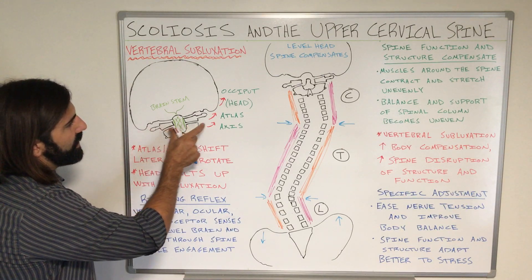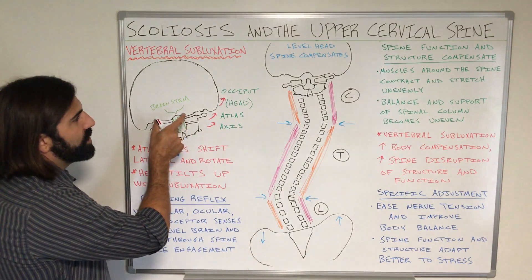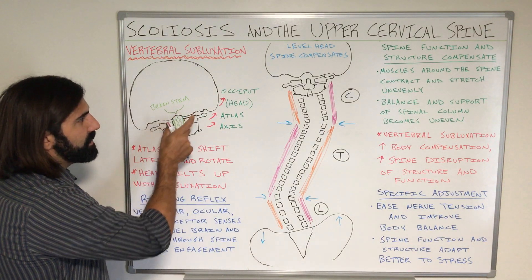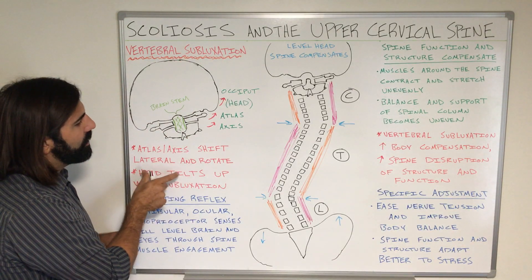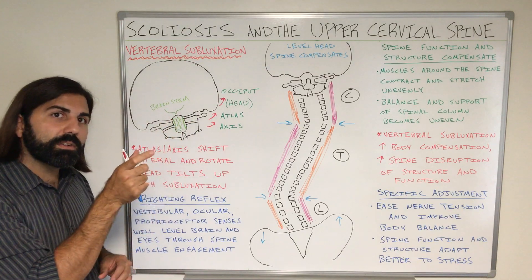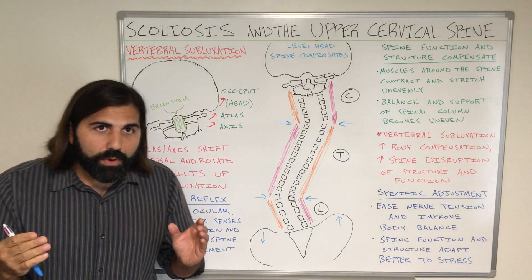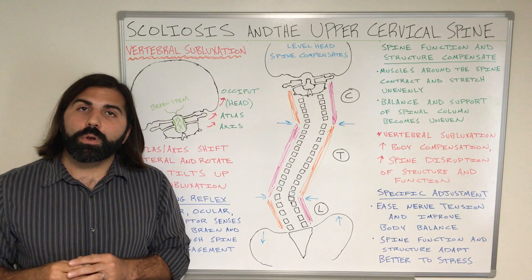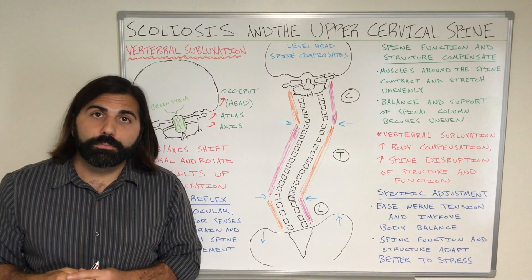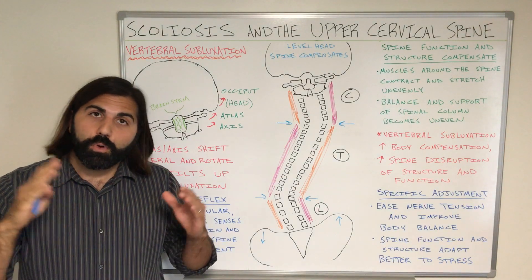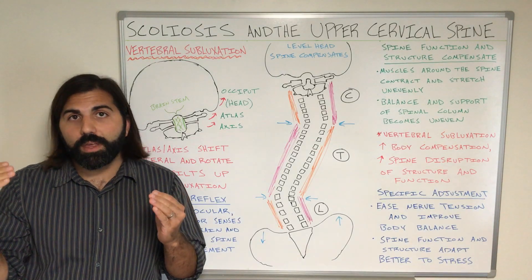Along with the shifting of the atlas and axis bone, the occipital bone will often also shift in the same direction, and as it shifts it's also going to tilt one way or the other. More often than not, the head and the occipital bone is going to tilt up to the same side as the vertebral subluxation. When that happens — when we have the head tilting up one way or the other — it's going to cause our visual field or our eyes to become uneven.